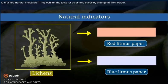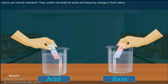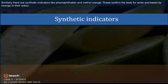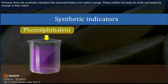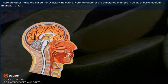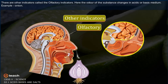Litmus are natural indicators. They confirm the test for acids and bases by a change in their color. Similarly, there are synthetic indicators like phenolphthalein and methyl orange, which also confirm the test for acids and bases by a change in their color.